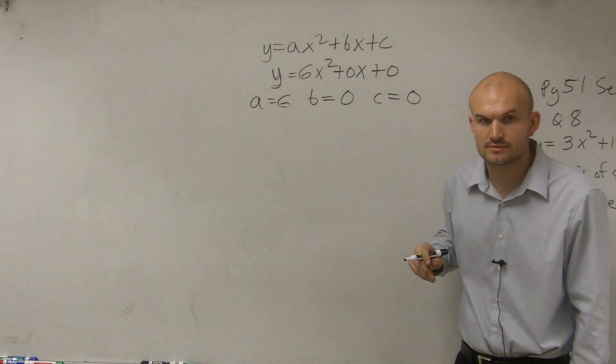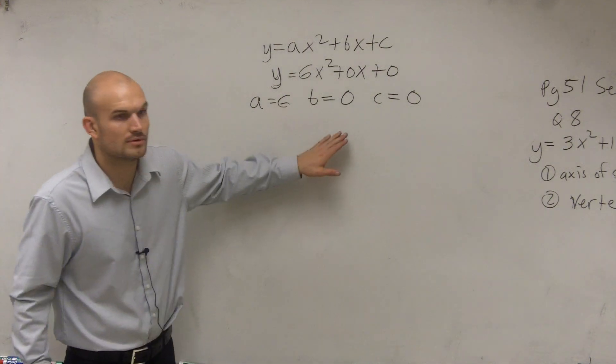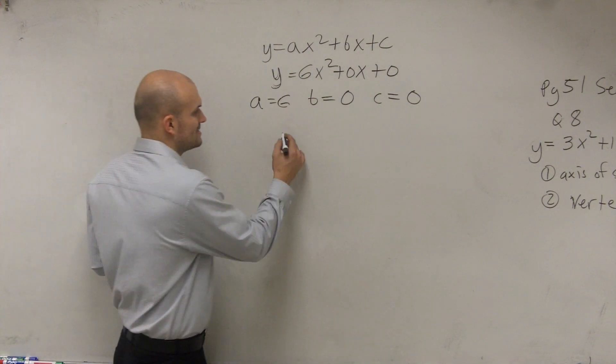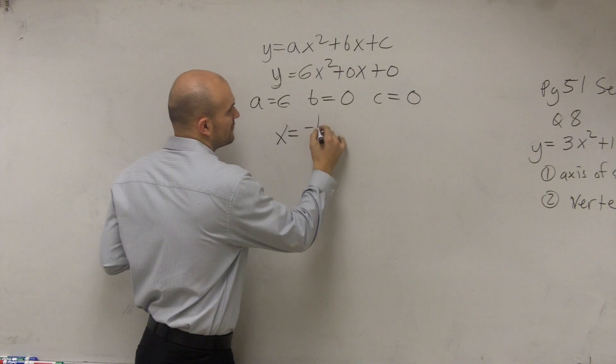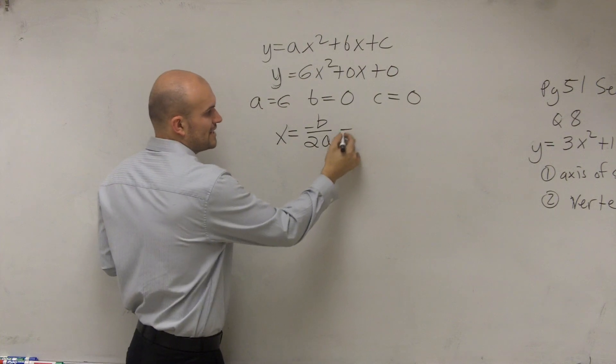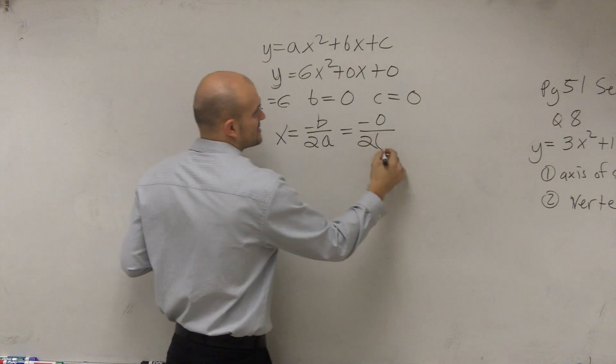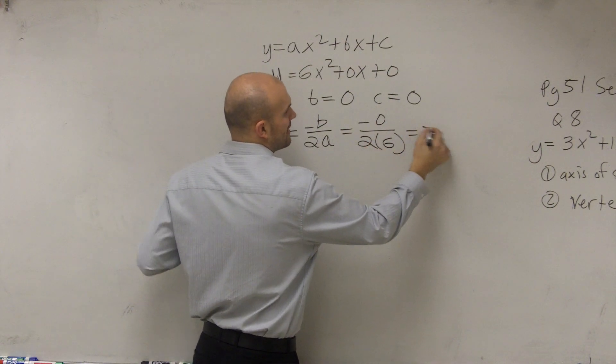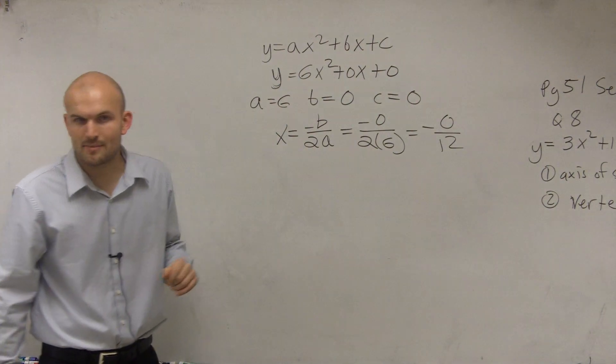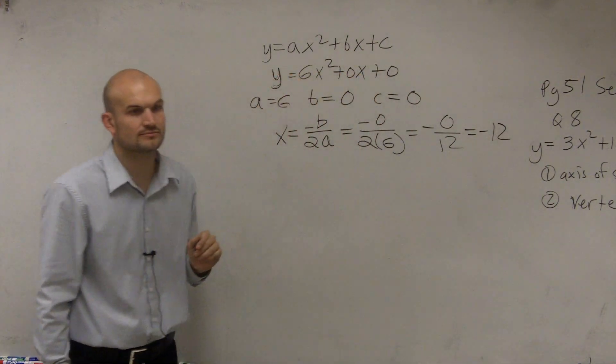All right. So then what we're going to do is simply apply the formula. The axis of symmetry was the formula of opposite of b divided by 2 times a. So you take your value of b, opposite of 0, divided by 2 times 6. So therefore, you have opposite of 0 divided by 12. Well, 0 divided by any number is equal to negative 12, OK?